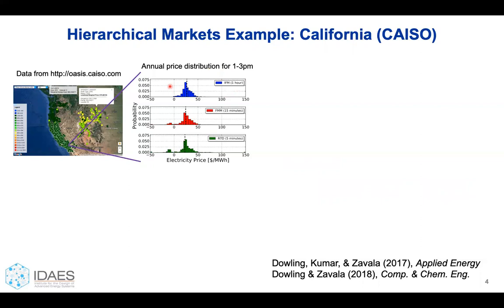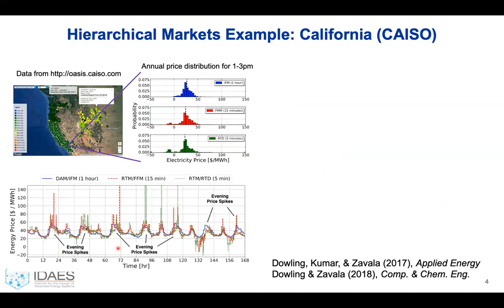In California, there are three levels: a day-ahead market, which sets hourly prices, and a 15-minute market, which sets 15-minute and 5-minute prices. These prices are actually set in a spatially distributed manner. Here is a snapshot of prices in California — each dot is a node, and there are about 8,000 nodes in this picture. We can see from the time series that the blue line, which is the day-ahead market, is fairly periodic, while there's a lot of volatility in the red and green lines, which are the real-time market.